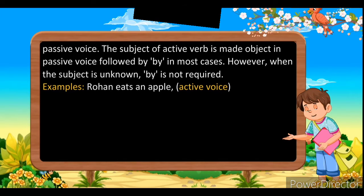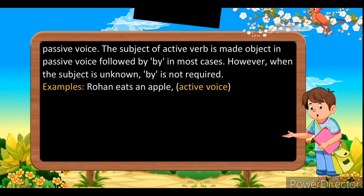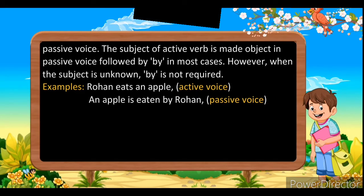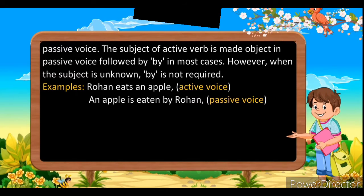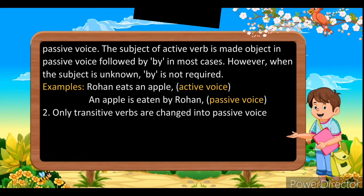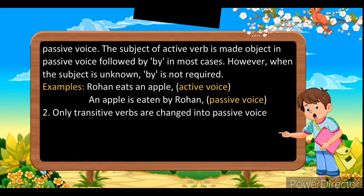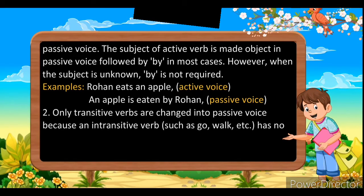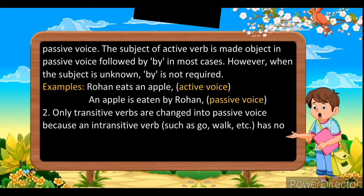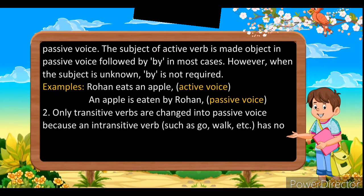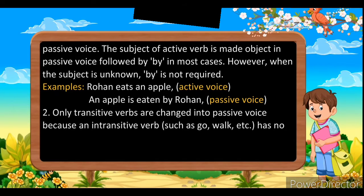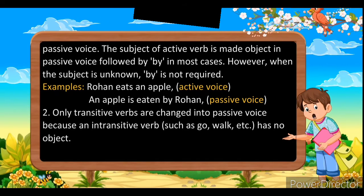For example: 'Rohan eats an apple' — it is in active voice. 'An apple is eaten by Rohan' — it is in passive voice. Note that only transitive verbs can be changed into passive voice, because an intransitive verb such as go, walk, etc. has no object.